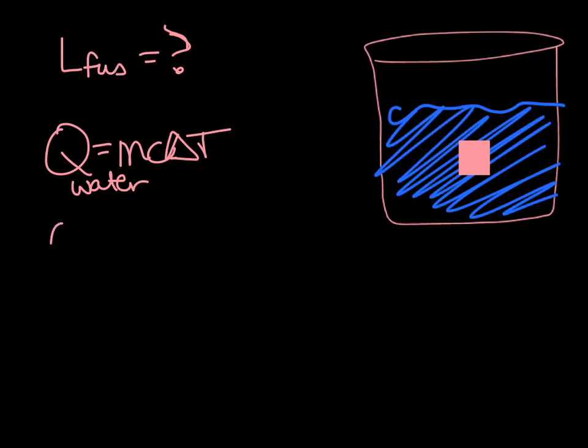The Q for the ice, what is the ice going to do? Melt. How are we going to find out how much heat is required to melt it? Q equals M times L. Remember we were solving for ML fusion? What did we say was true about these two heats? They were the same. Because the heat gained by one is equal to the heat loss by the other.